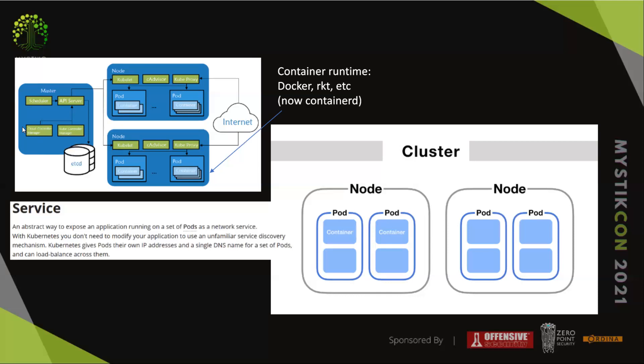The controller manager watches for nodes to be active and handles jobs, service accounts, and more. In each worker node there is an agent called kubelet running, which also has its own API — a very typical way to compromise containers. There's also cAdvisor, a metrics component that is also exposed, and the kube-proxy, which is responsible for exposing services to the internet.